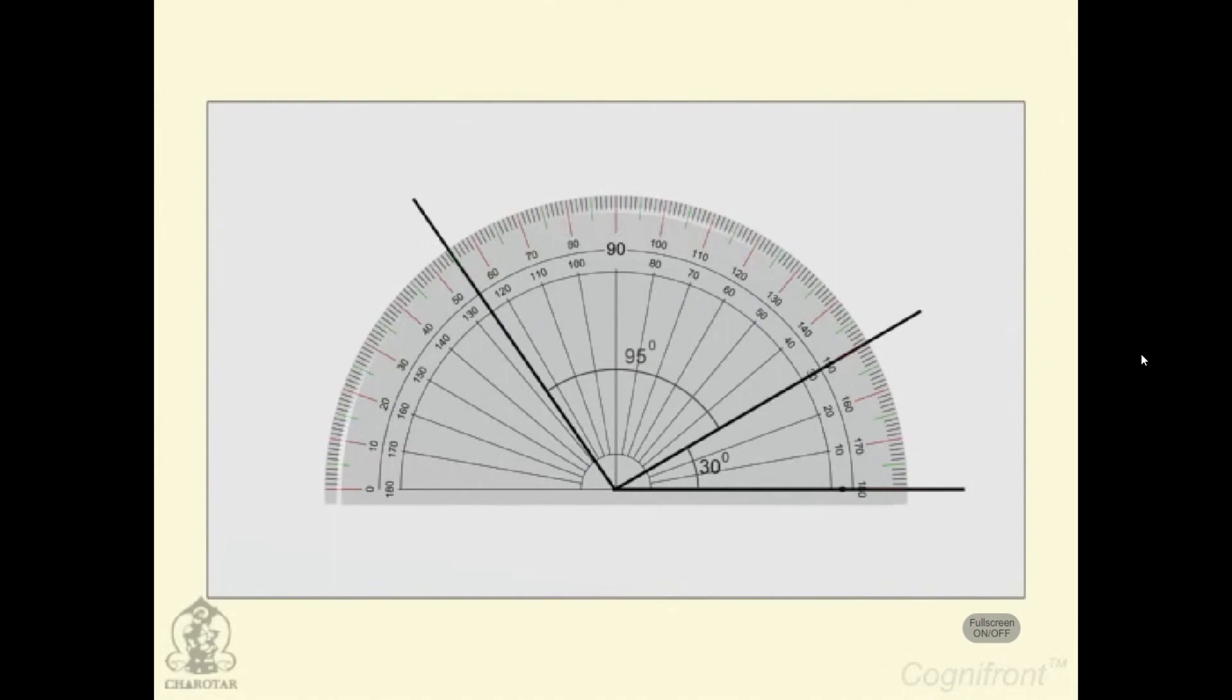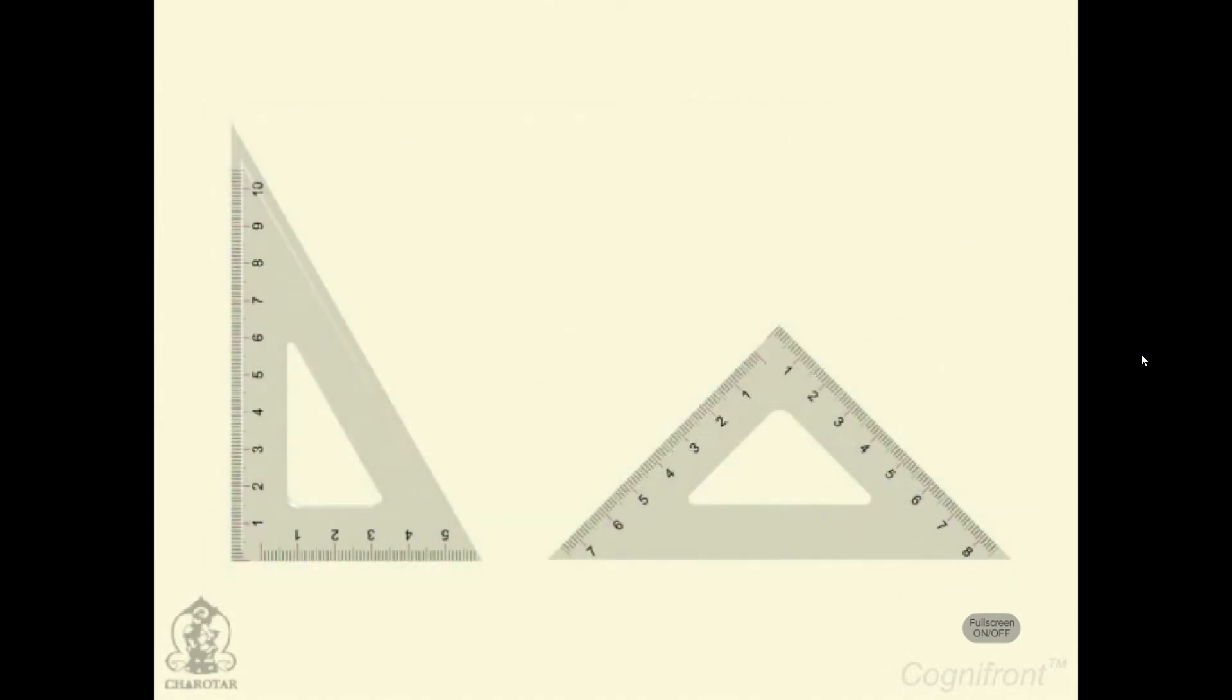Protractor is used to measure and layout angles. Another tool is set squares also known as triangles. They come in flavors of 30, 60, 90 degrees and 45, 45, 90 degrees.